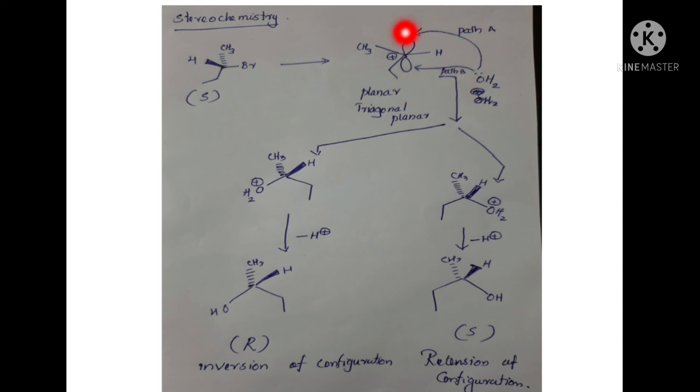The upper portion attack gives product A and the lower portion gives product B. These are different products. One is R configuration. Since the starting material was S, this represents inversion of configuration. The other product shows retention of configuration. This gives a racemic product mixture. This is the stereochemistry.